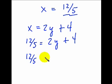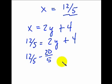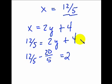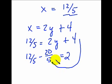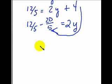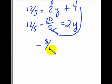I'm going to leave the 12 fifths on the left, move the 4 across, and while I'm doing it, I'm going to change it into fifths. I think 4 would be negative 20 fifths. And since we moved it across the equation, it ends up being negative 20 fifths, or negative 4. Leave the 2y on the right side — I forgot to put the y in, but there it is. Do the arithmetic: 12 fifths minus 20 fifths.